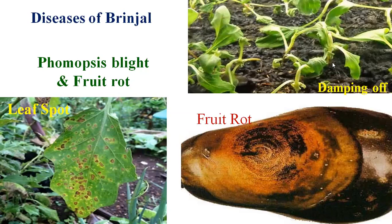Damping off, leaf spot, and fruit rot are the three types of different symptoms caused by Phomopsis vexans, which causes Phomopsis blight and fruit rot. The primary source of infection is through infected plant debris, soil, and seed-borne inoculum. The secondary source of infection is rain splash, farm implements, and also insects, which carry conidia on their body parts such as legs and wings when they come in contact with rotted fruit.